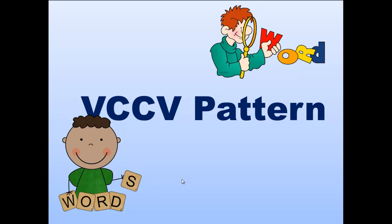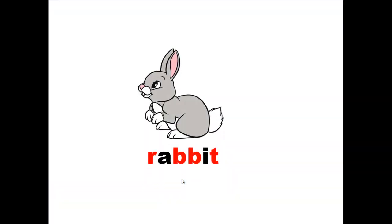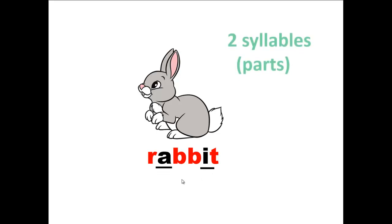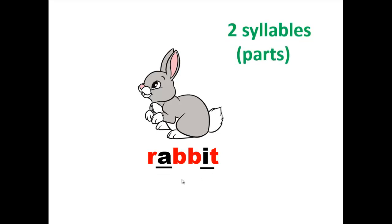What does that mean? Let's check this word: rabbit. How many vowel sounds does it have? It has two vowel sounds. So this word is made up of two syllables or two parts.